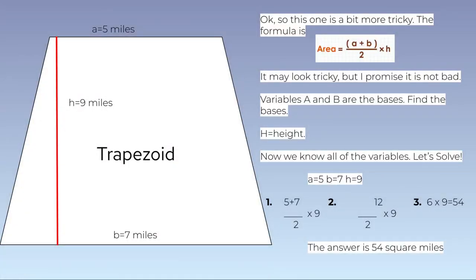The h, like before, is the height. Now we know all of the variables. Let's solve. So if a equals 5, which is the first base, and b equals 7, which is the second base, and h equals 9, we set it up like this: 5 plus 7 divided by 2 times 9. So then we find 5 plus 7 is 12, right? Divided by 2 times 9. So we have 12 divided by 2 is 6, times 9 is 54. The answer is 54 square miles.